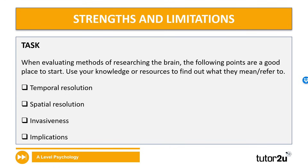Let's think about our AO3 skills. When evaluating methods of research in the brain, the following points are a good place to start: temporal resolution, spatial resolution, invasiveness, and implications. There are many more things, but we'll focus on these four for now. Use your knowledge or resources to find out what they mean and what they refer to. Pause the video for 10 minutes and see if you can find the definition of each of these terms and how they would relate to the different ways of measuring the brain.